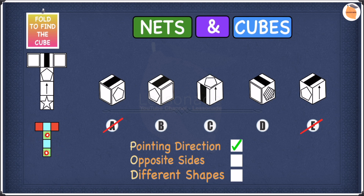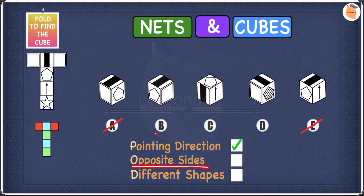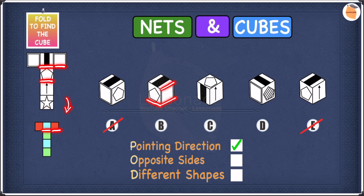Let's use the opposite sides rule for B. The shapes in B are a square, a pentagon, and a stripe. Looking at the net, the stripe is here, and then we have the square and the pentagon. Checking the opposite sides diagram, the square, the stripe, and the pentagon are all on different colors, meaning none of them are on opposite sides. So we can keep B.